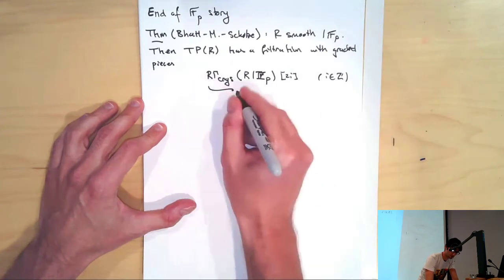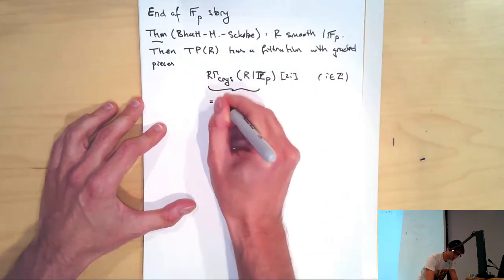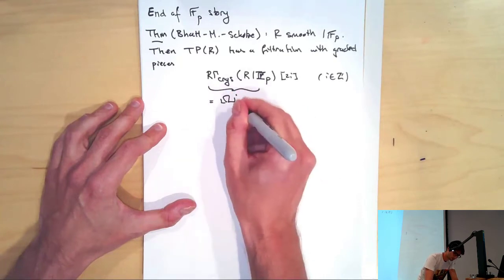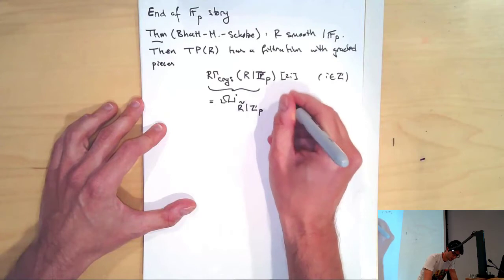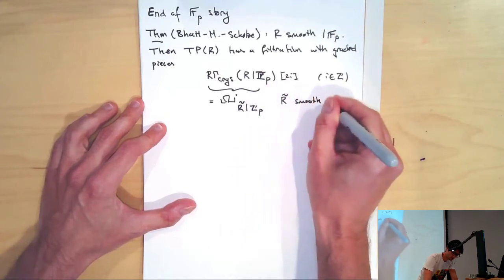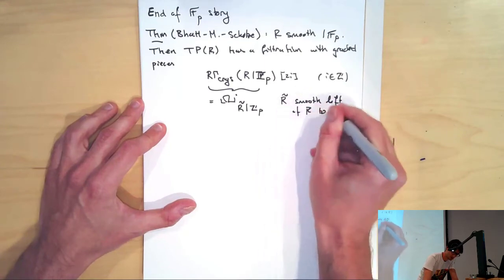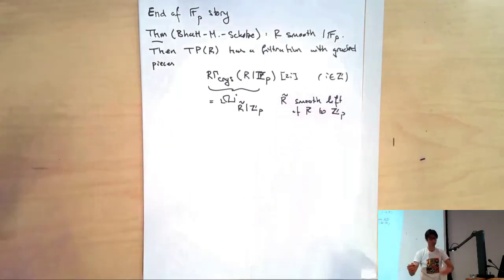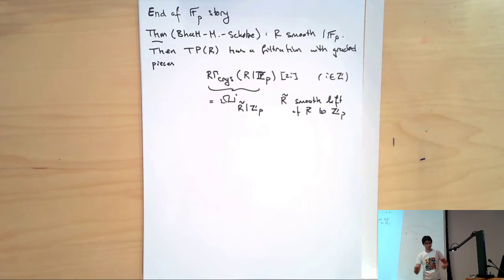I remind you of the formula I wrote this morning: this crystalline cohomology means the de Rham cohomology of R-tilde over ZP, where R-tilde is any smooth lift of R as a ZP algebra. The theory of crystalline cohomology tells you that this object uniquely exists and is independent of the lift.